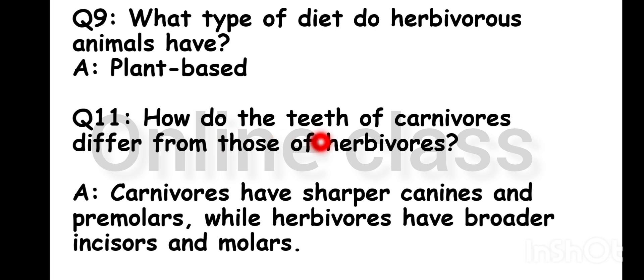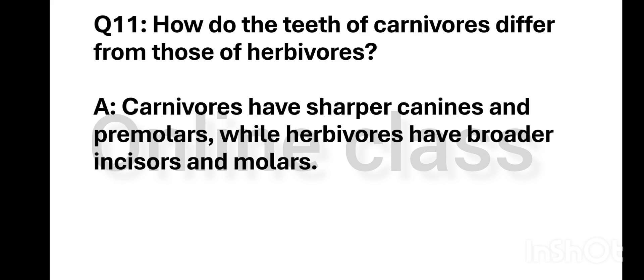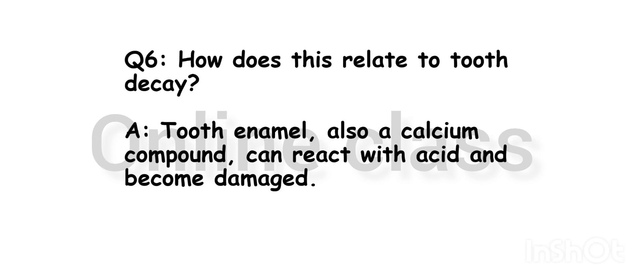How do the teeth of carnivores differ from those of herbivores? Carnivores have sharper canines and premolars, while herbivores have broader incisors. How does this relate to tooth decay? Tooth enamel can react with acid and become damaged.